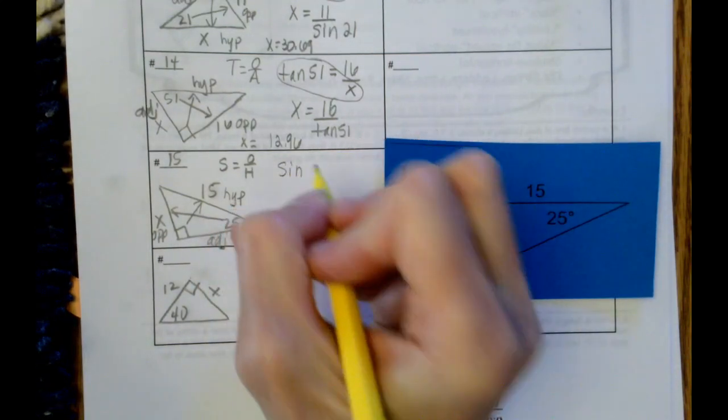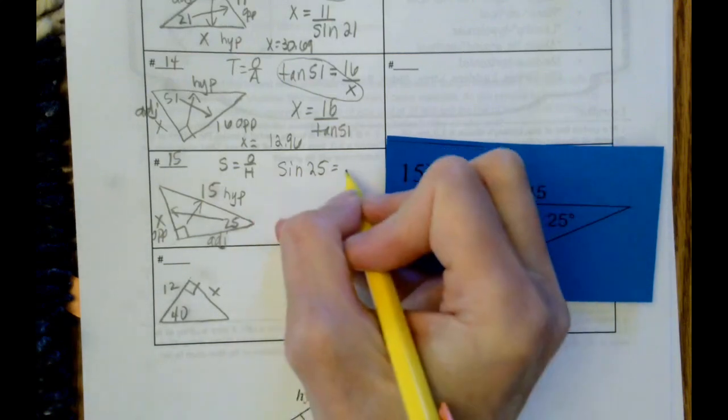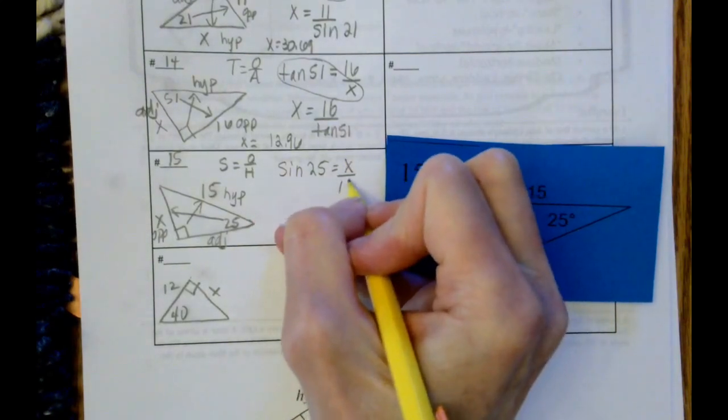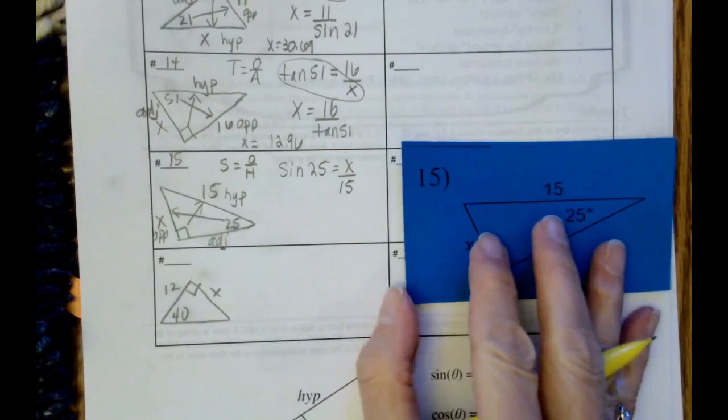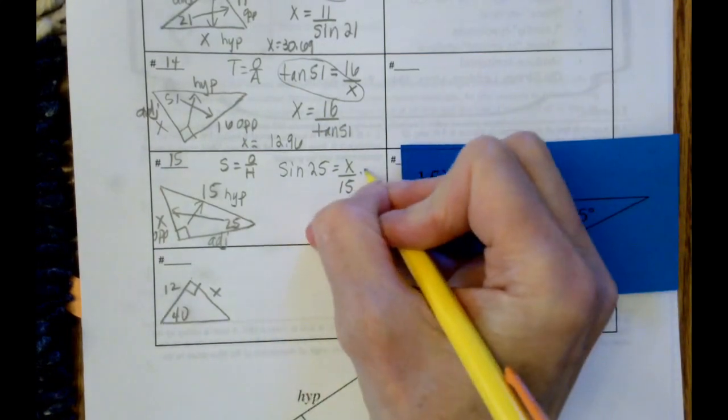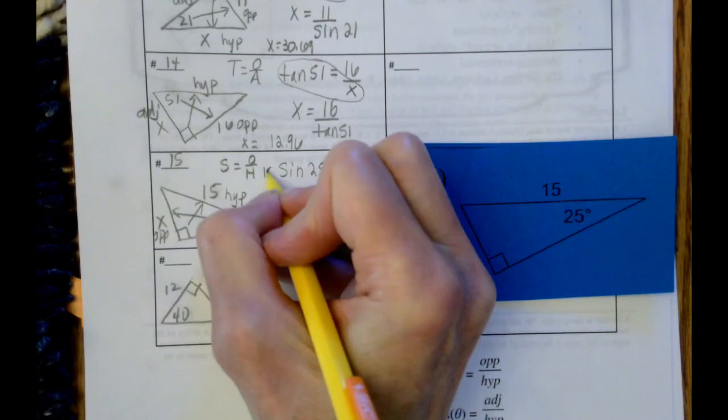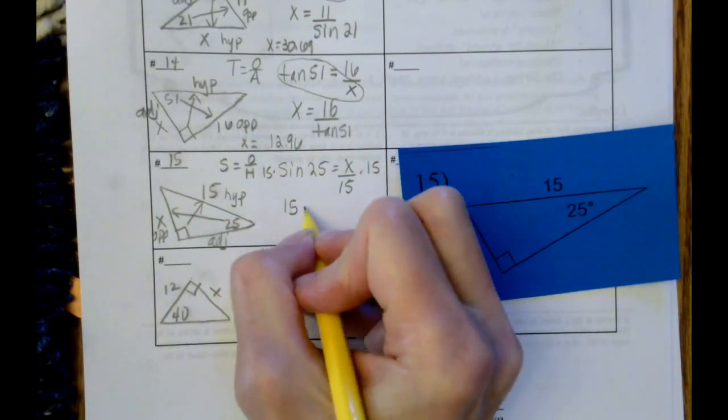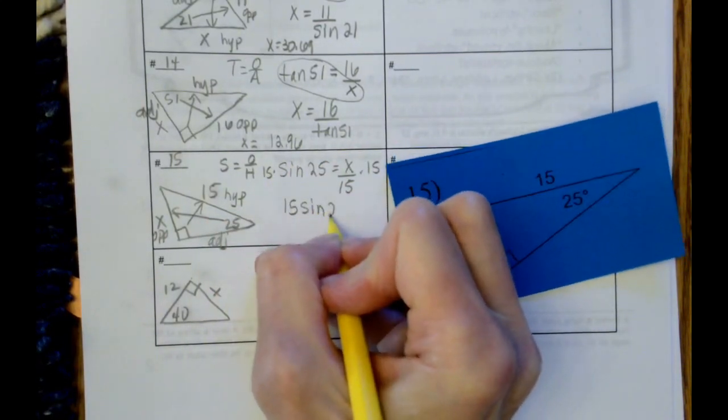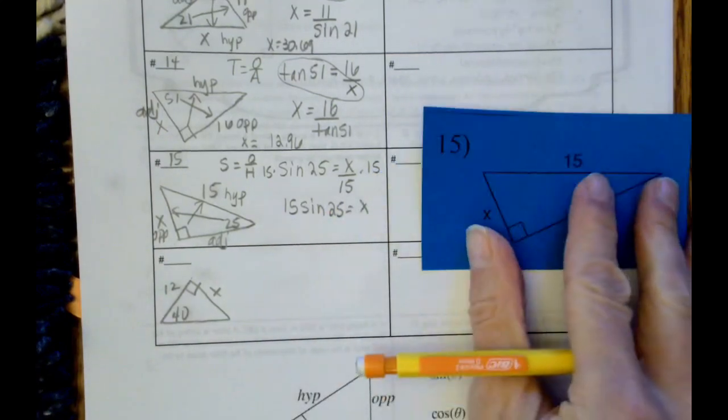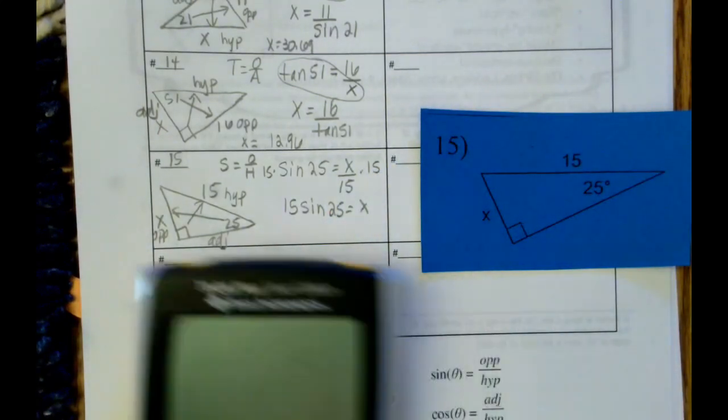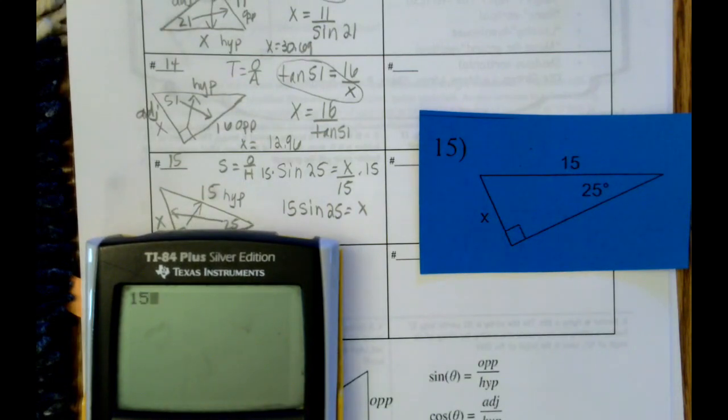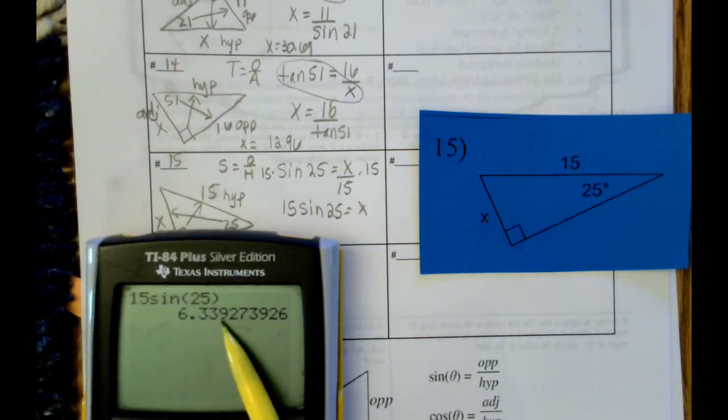It's going to be sine of 25 equals the opposite divided by hypotenuse. And what's going to happen is we're going to multiply both sides by 15. I'll write it better to see what we need to type in. 15 times the sine of 25 equals x. Then we type it in. 15 times sine of 25. And we get 6.339, but because 9 is 5 or higher, we're going to say that this is 6.34.